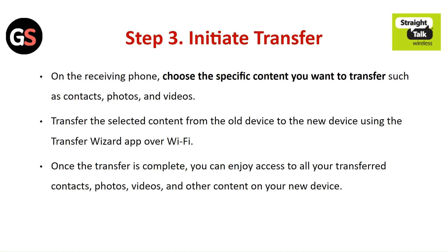Step 3: Initiate transfer. On the receiving phone, choose the specific content you want to transfer, such as photos and videos. Transfer the selected content from the old device to the new device using the Transfer Wizard app over Wi-Fi. Once the transfer is complete, you can enjoy access to all your transferred content — photos, videos, and other content — on your new device.